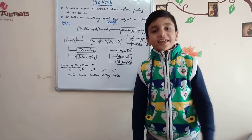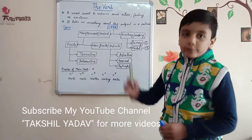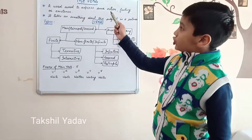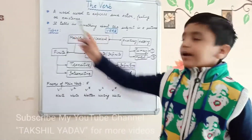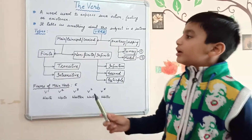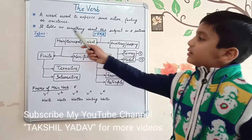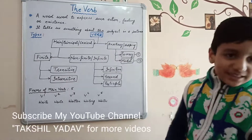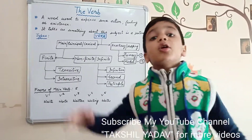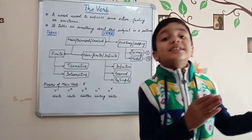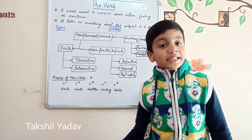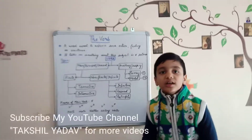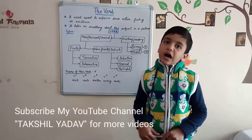From these sentences, we can conclude that a verb is a word that is used to express some action, feeling, or existence. It tells us something about the subject in a sentence — specifically, it tells us about the work done by the subject. It is also known as an action word or a doing word.